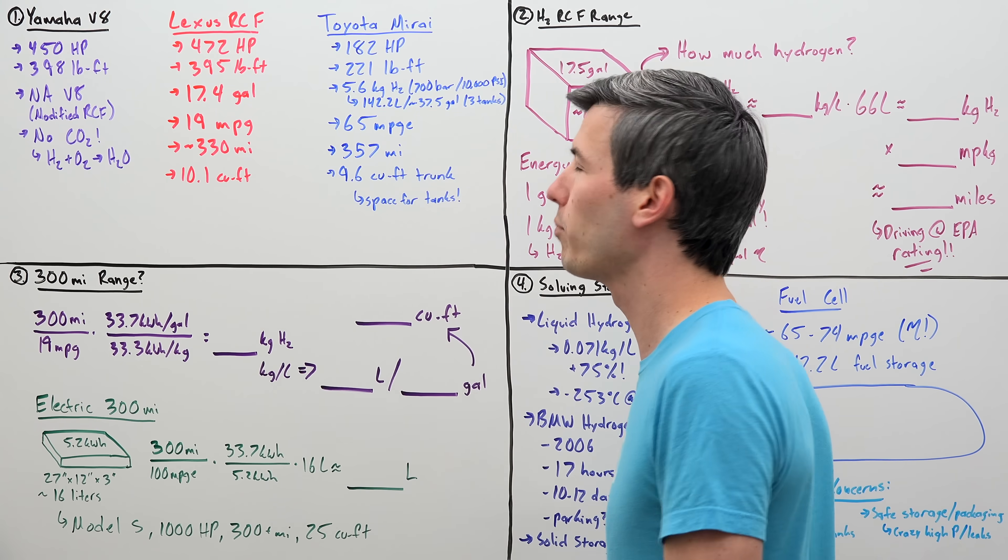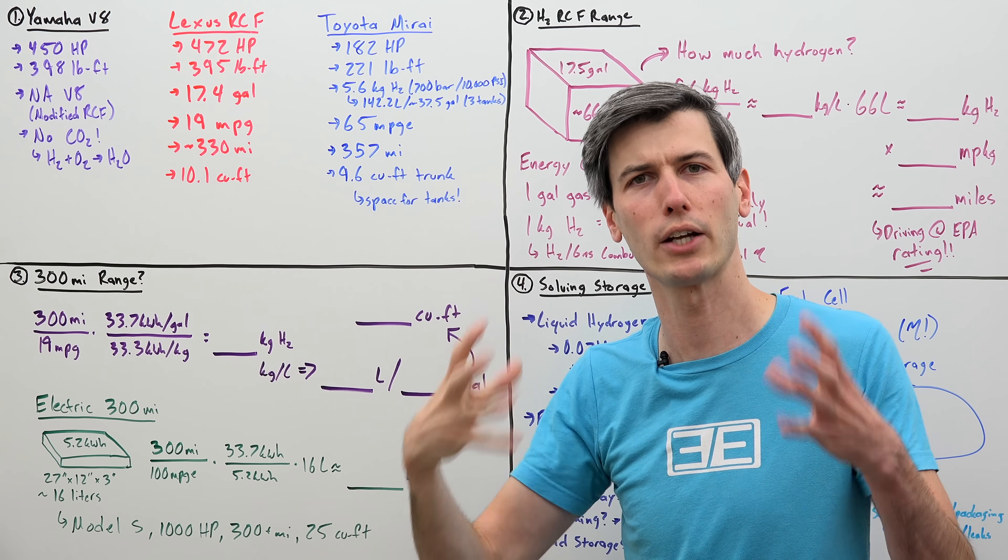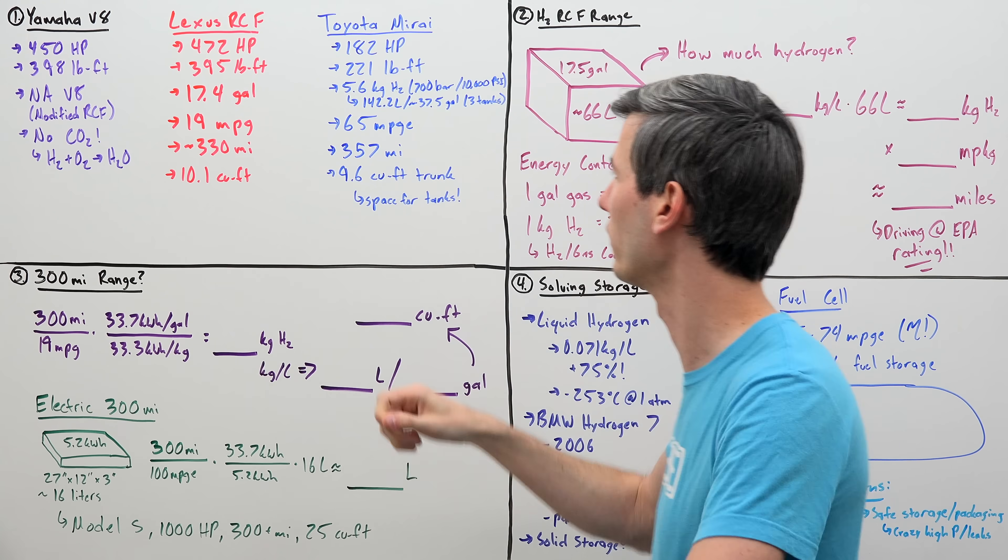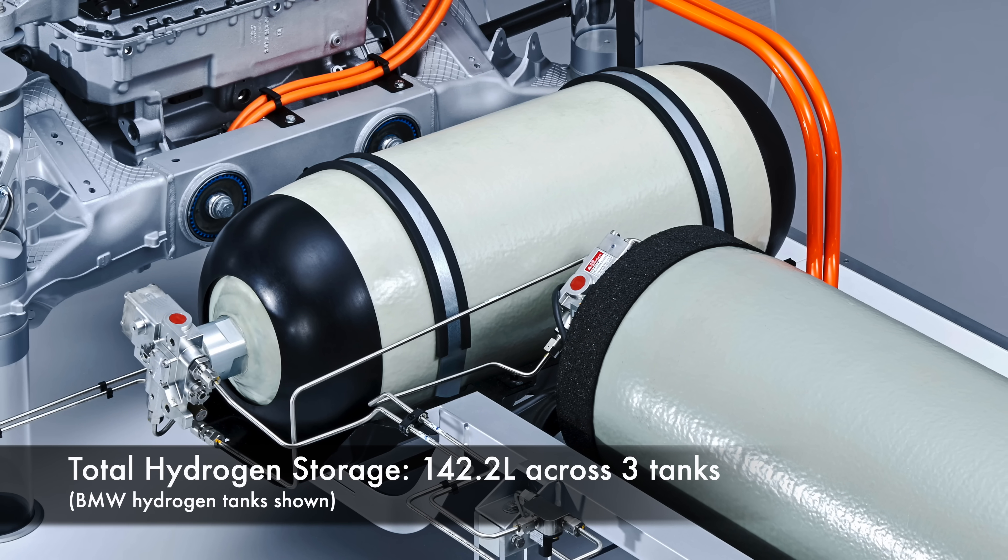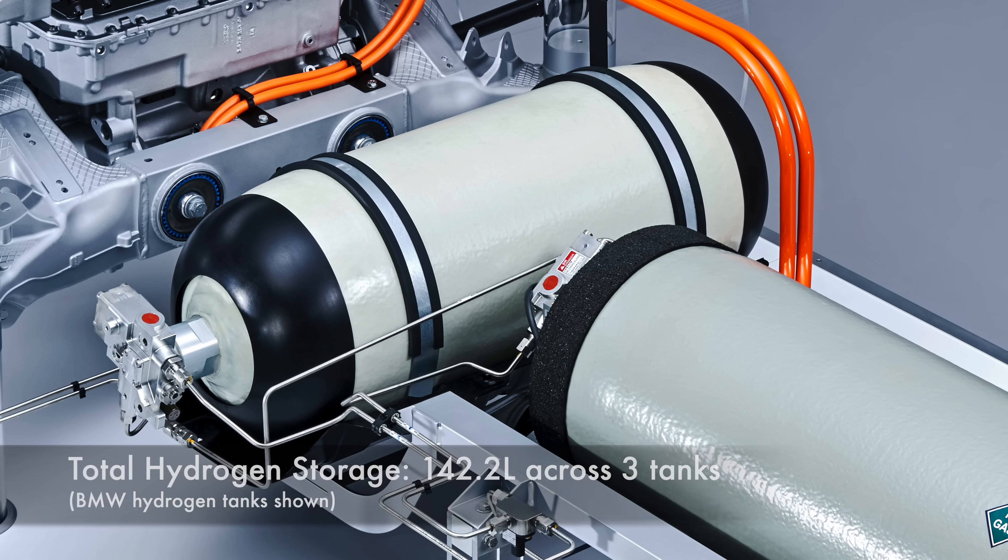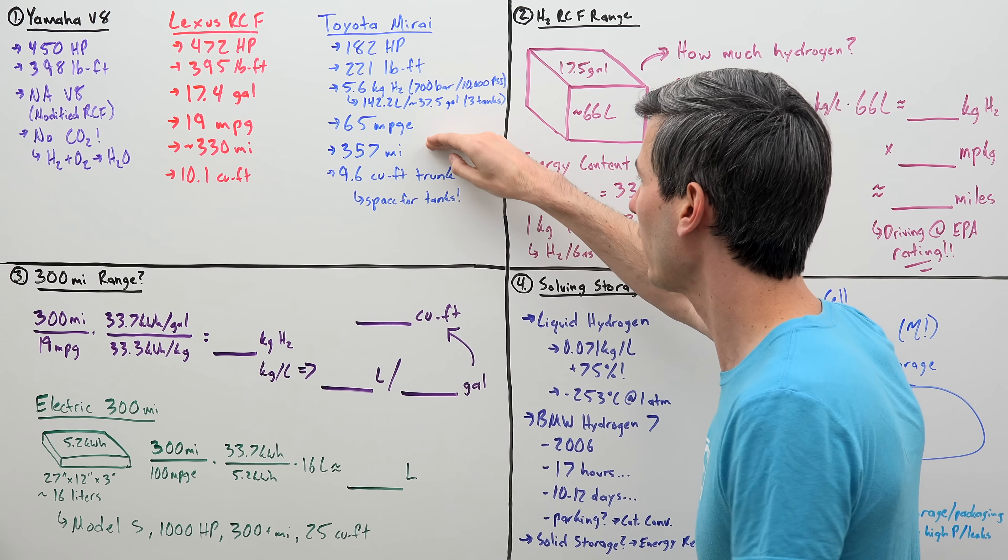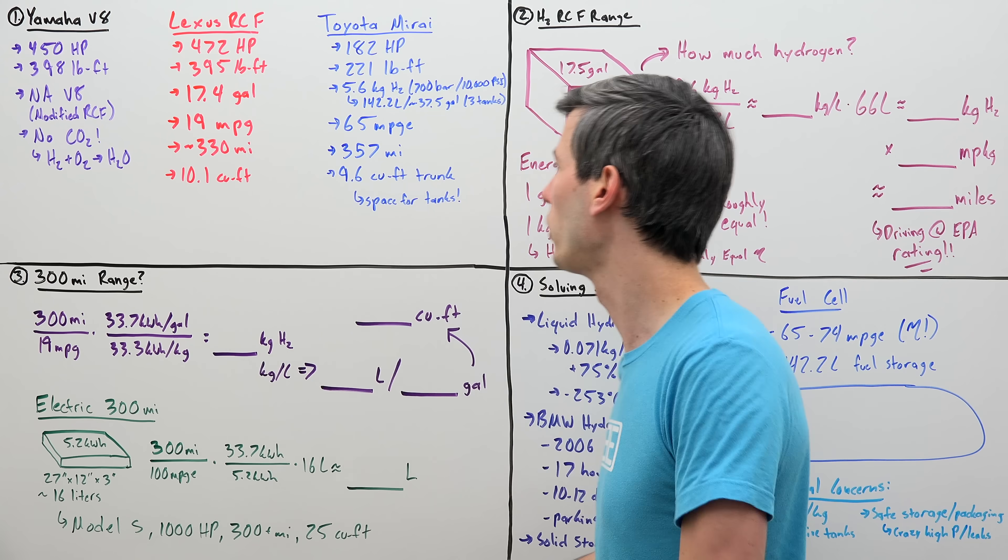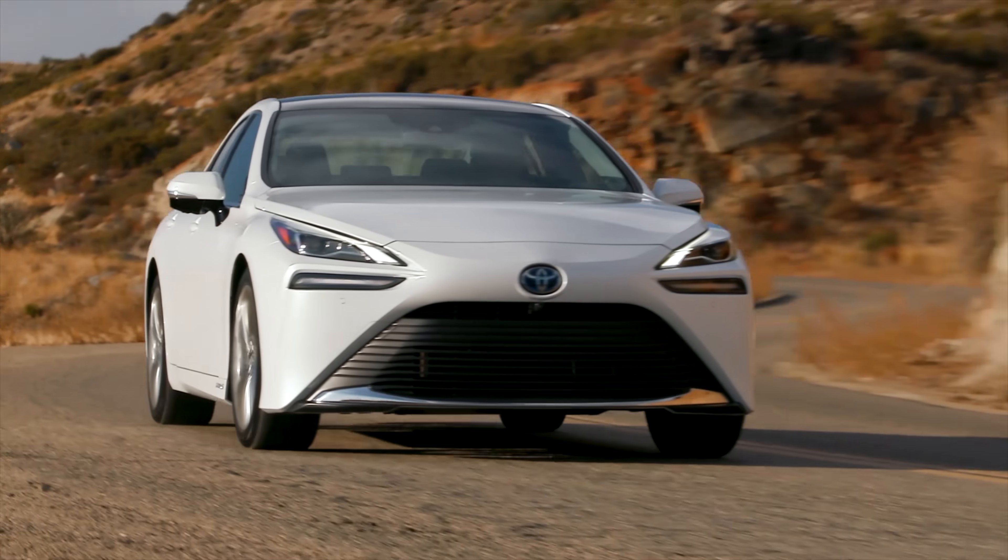The Toyota Mirai has 5.6 kilograms of hydrogen stored on board. This is basically how we measure how much hydrogen you store in a vehicle because it's stored as a compressed gas rather than a liquid that you can simply measure in gallons. So we have 5.6 kilograms of hydrogen that is within 142.2 liters of hydrogen storage tanks. There's actually three tanks in the Toyota Mirai and it gets a combined MPGE rating of 65. So that gives it a range of about 357 miles and it has a 9.6 cubic foot trunk.